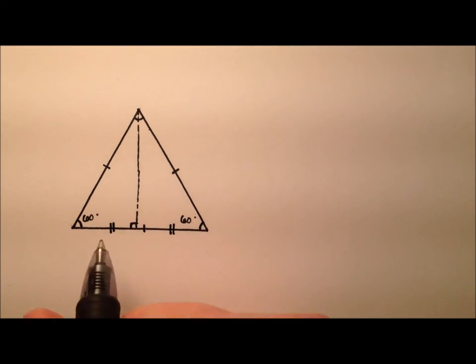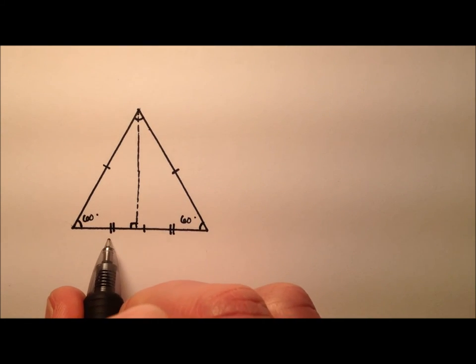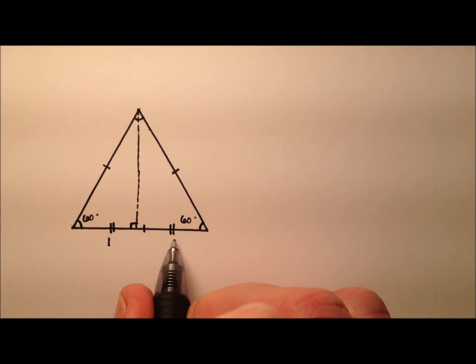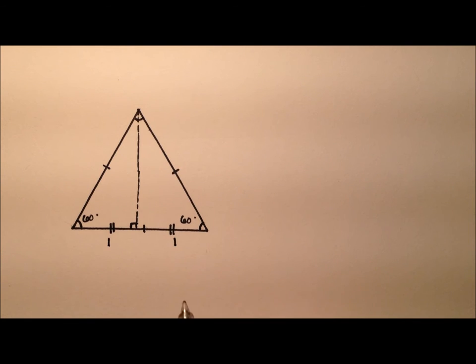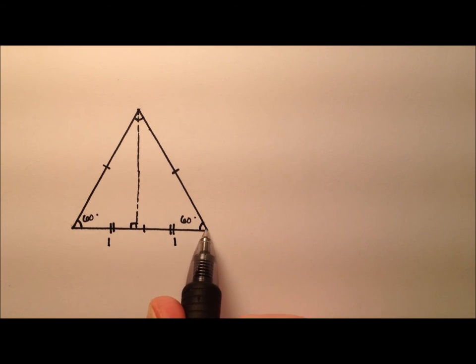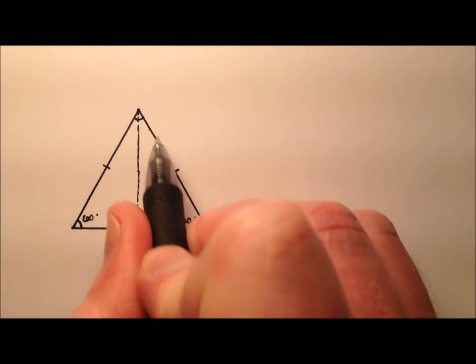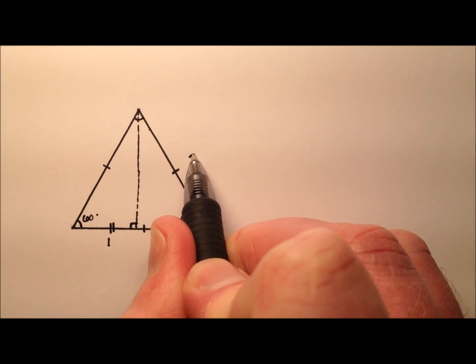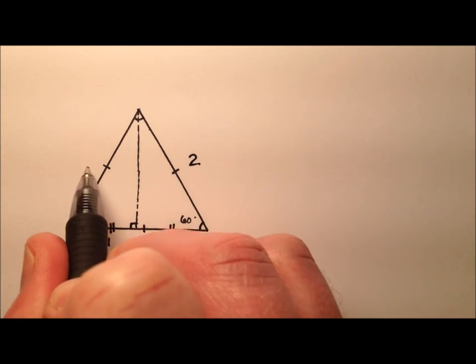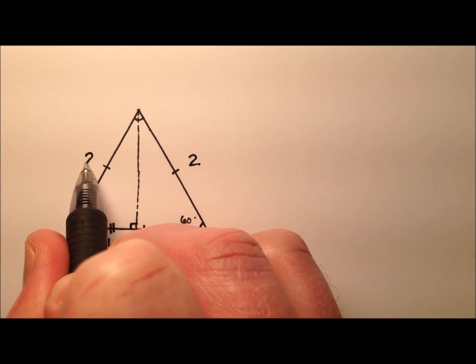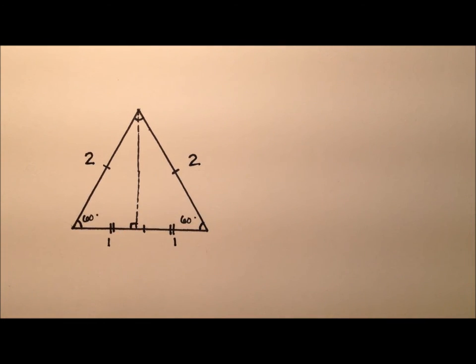If we give this side a one down there and a one here, that means the entire base is two units, which means the other sides are also two units.